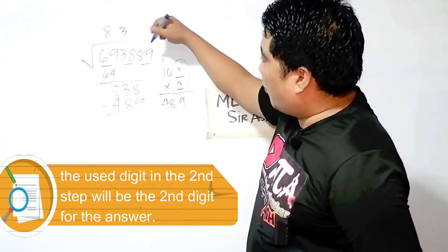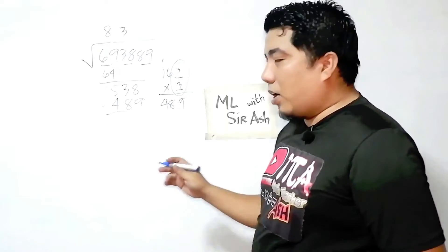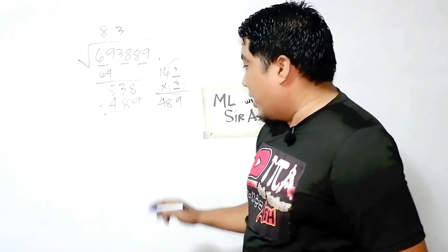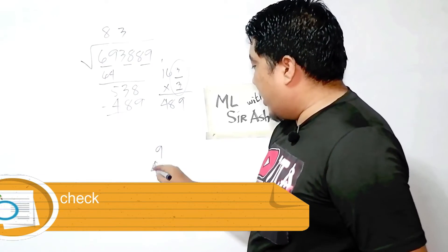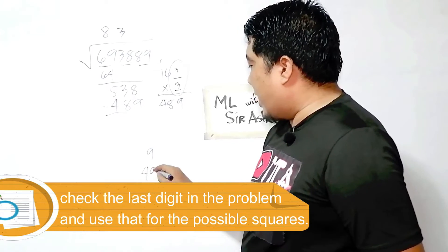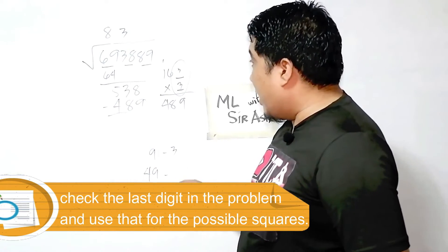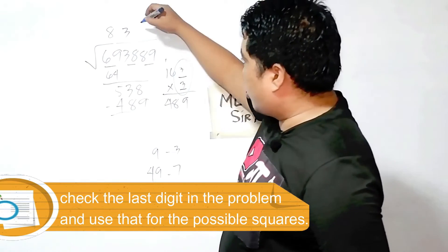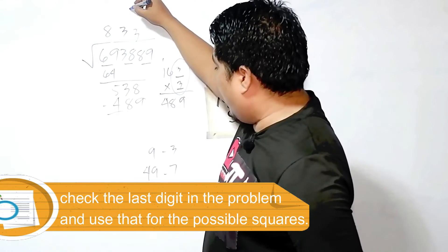Now let us find our final digit. The last digit here is 9. What are the perfect squares from 1 to 100 that end with 9? That is 9 and 49. The square root of 9 is 3; the square root of 49 is 7. So our answer could be 833 or 837.